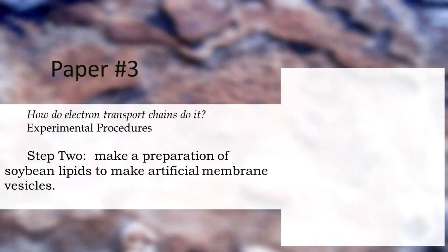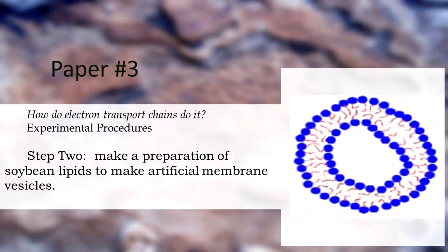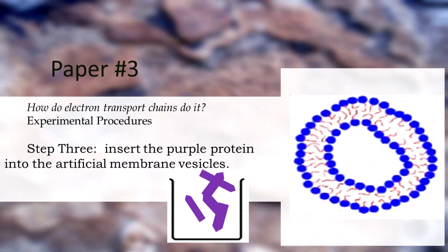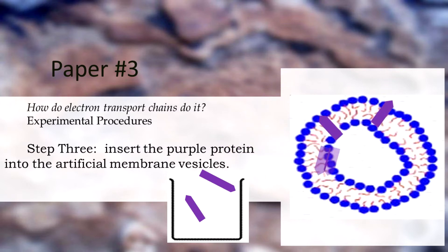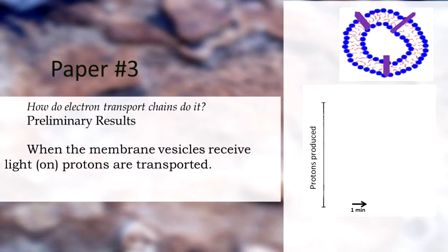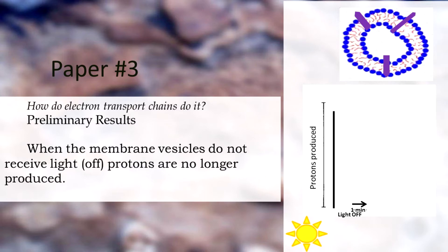The next step of the procedure was to use soybean lipids to make artificial membrane vesicles. Racker and Steckenius then inserted the purple protein into these artificial membrane vesicles.